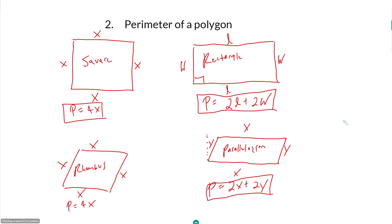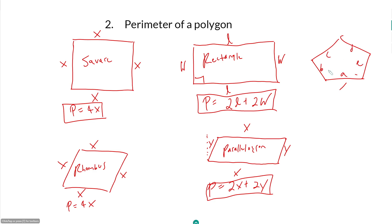You can continue this for any type of polygon. For example, if we have a pentagon with sides labeled a, b, c, d, and e — if it is a regular pentagon, all sides are equal. If not, the perimeter is simply a plus b plus c plus d plus e.